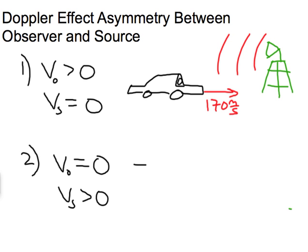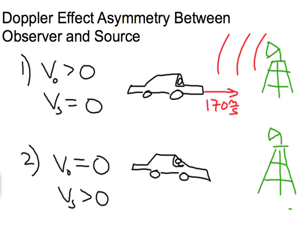In situation two, the car is not moving, but the source of the sound is moving. So let's put it on some wheels here, and we better give it a rocket pack. So it's moving, interestingly enough, at the exact same speed that the car was moving at in situation one.